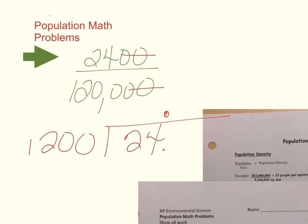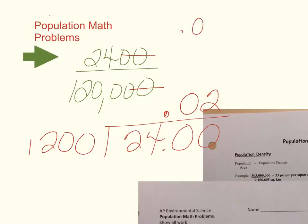1,200 does not go into 24, so let's add a zero — still doesn't go into 240. Now we put a 1 here — it goes into 2,400 twice. So our answer is 0.02, or we can move the decimal point over twice.